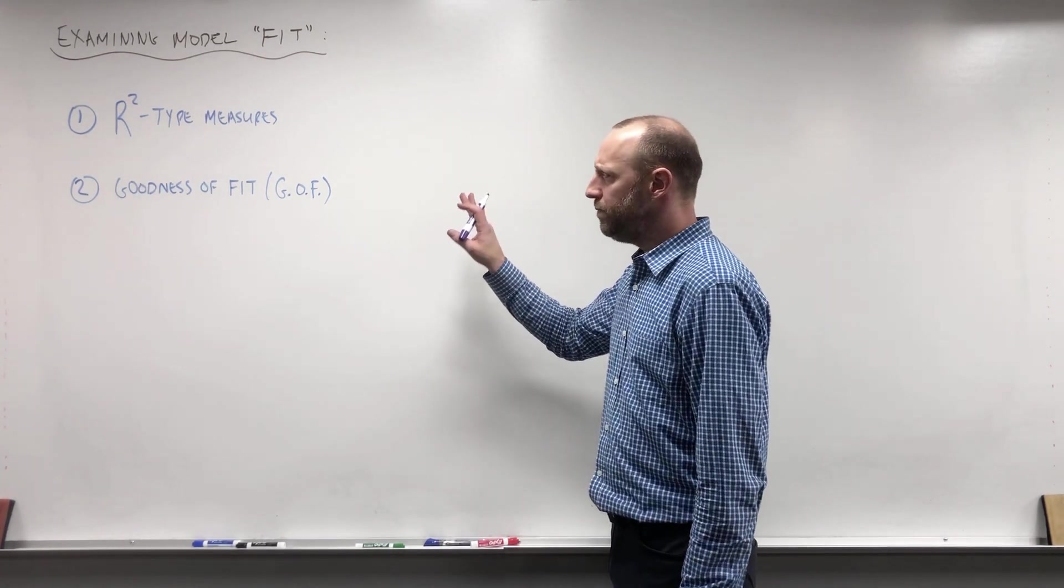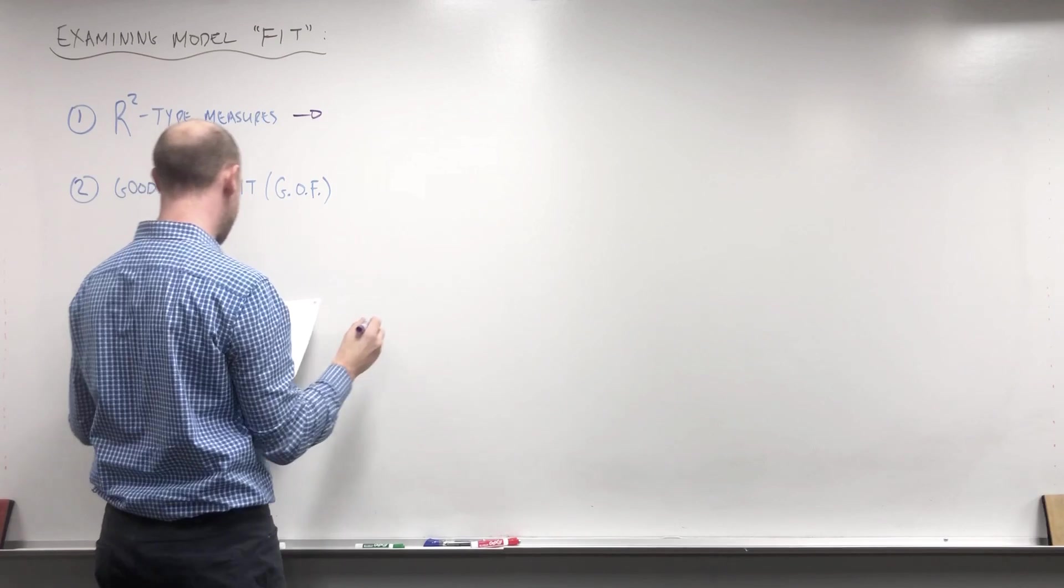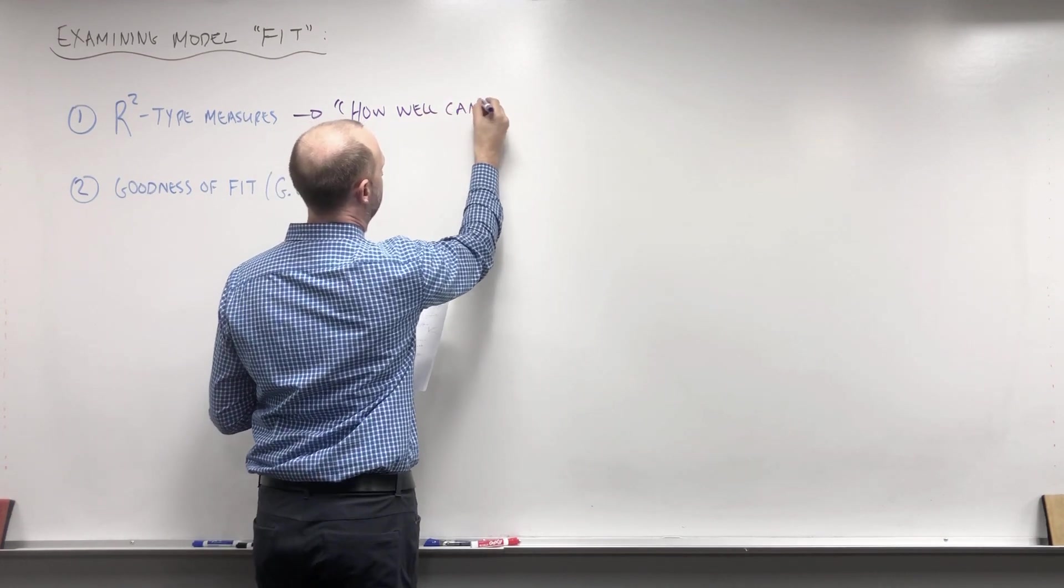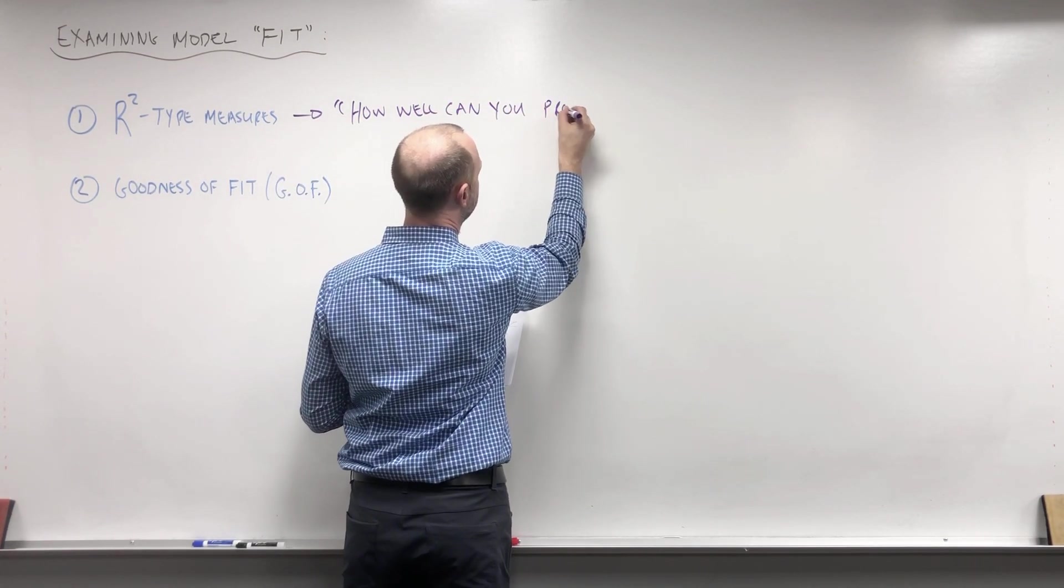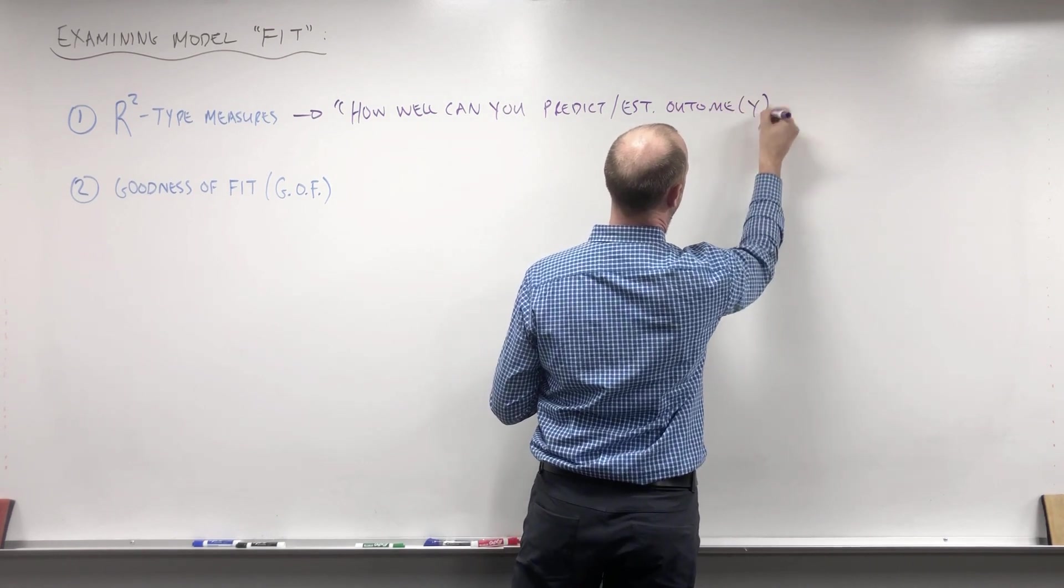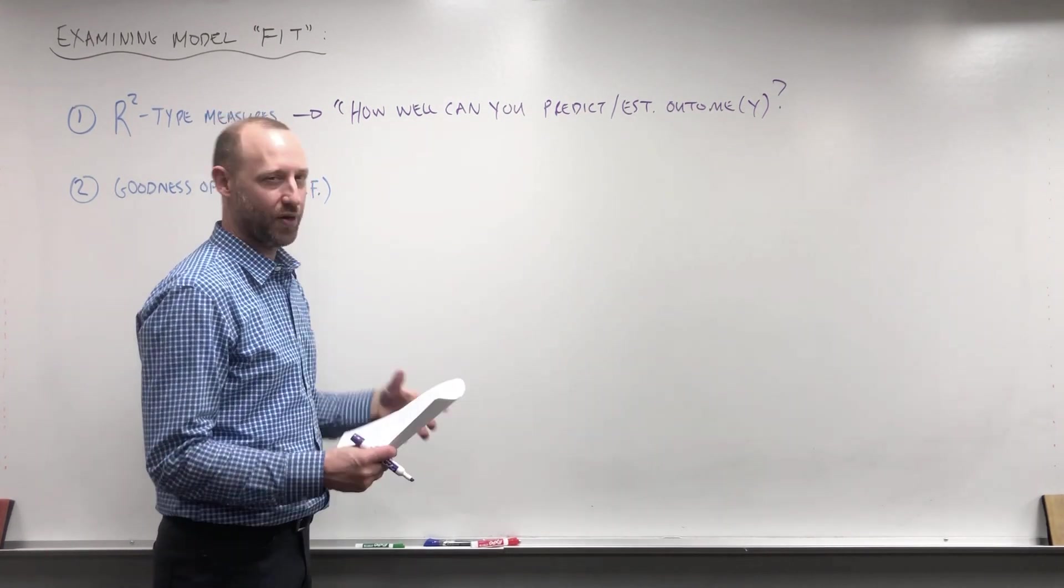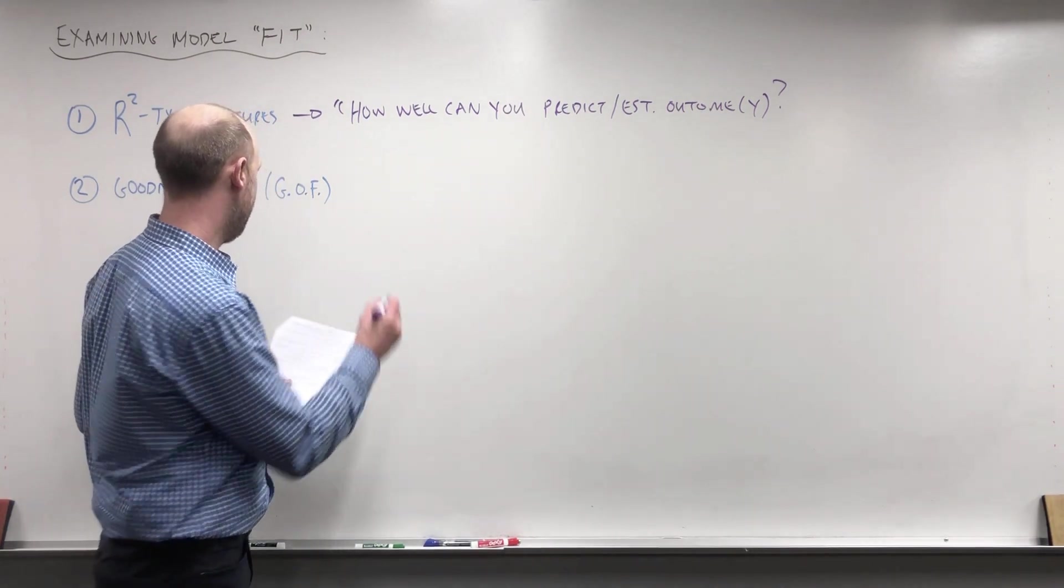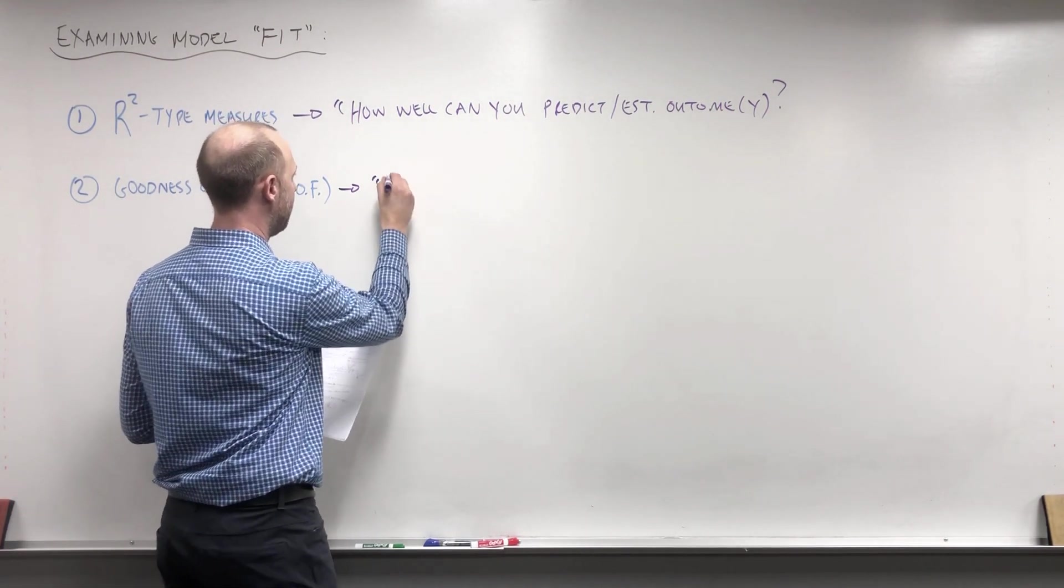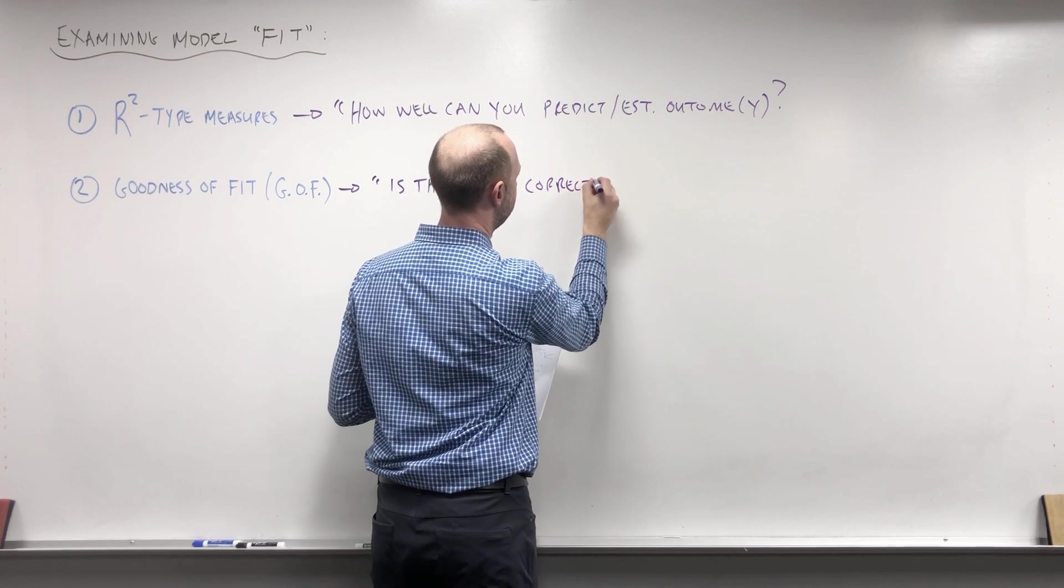They're related, but what I'm going to do is try and tease them apart for you. R-squared type measures really try to get at the idea of how well can you predict or estimate the outcome. Goodness of fit tests are trying to get at the idea of is the model correctly specified.